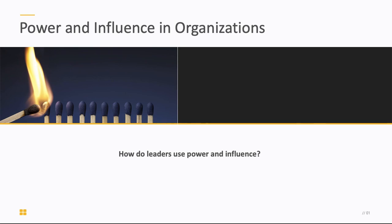In the module pages that follow, we're going to talk about how leaders use their power and influence. So far we've talked about different types of power and these influence tactics as a way to use our power to get other people to do what we want. In the pages that follow, we'll talk about organizational politics and what role power and influence plays there, as well as conflict resolution — how we can use power and influence to resolve conflicts either effectively or ineffectively. That's our mini lecture for the week. If you have any questions, please reach out, and I hope you have fun going through the rest of these slides on politics and conflict resolution. Have a great week.